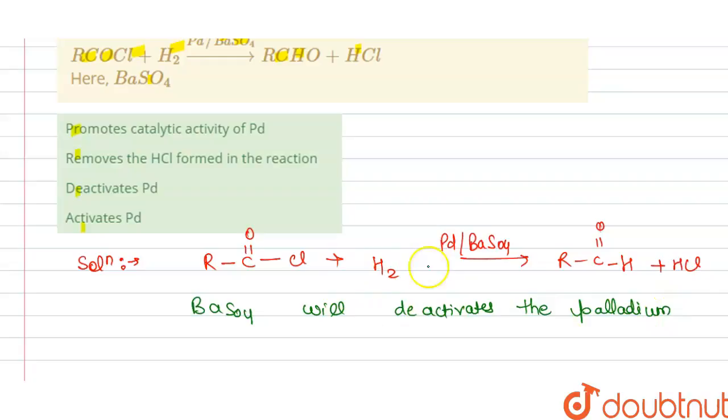So from this we can say that BaSO₄ deactivates Pd. This is the answer to the question. Now we check which option is correct - option C is correct.